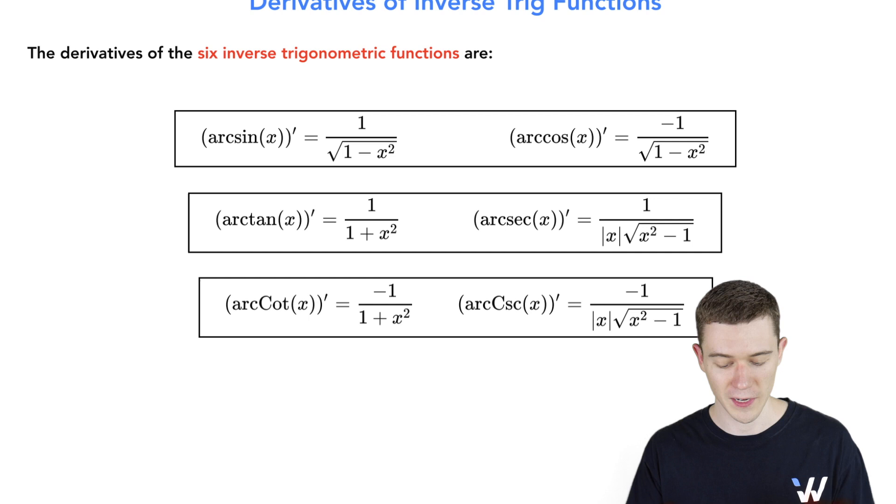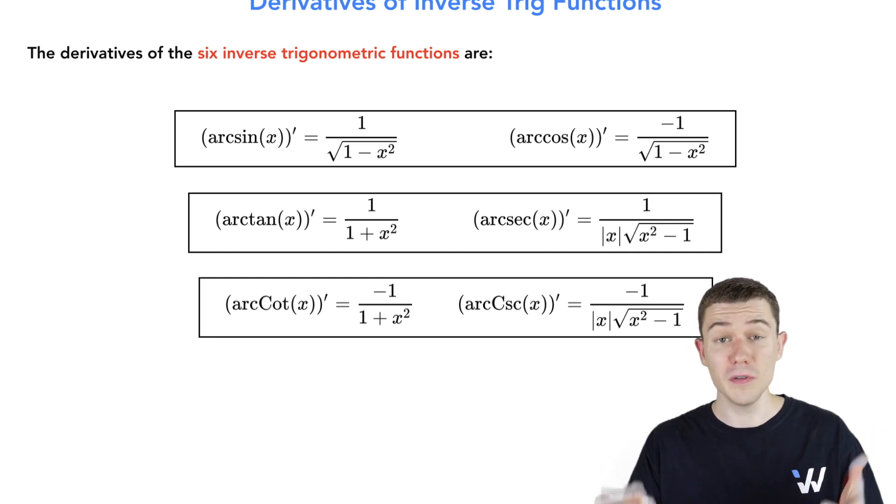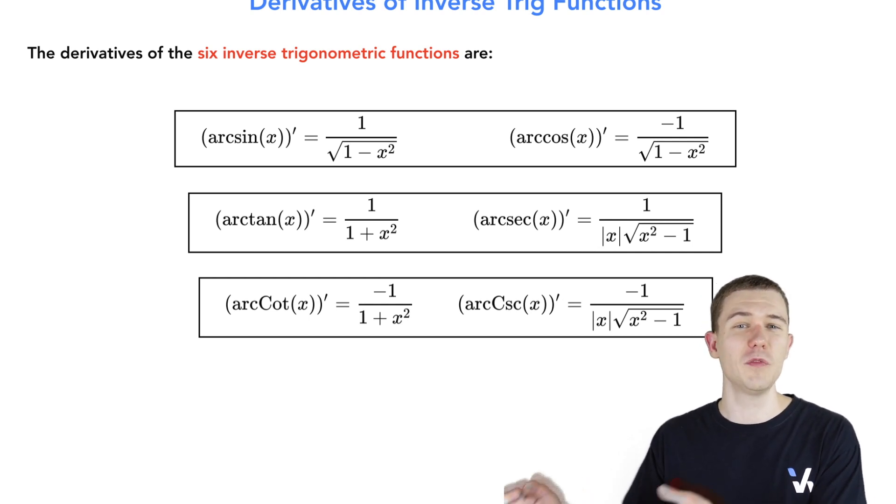The derivative of arc tangent is very famous. Arc tangent is a nice function. The derivative of arc tangent is 1 over 1 plus x squared. And the derivative of arc cotangent is exactly the same, just with a negative.